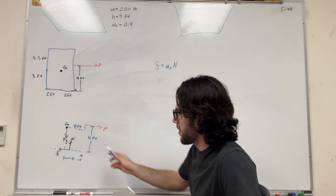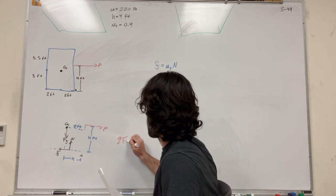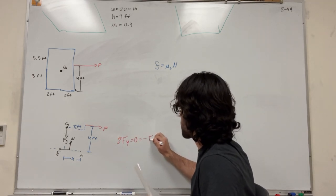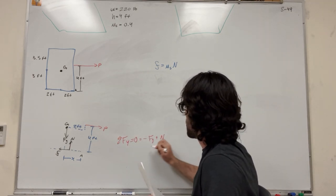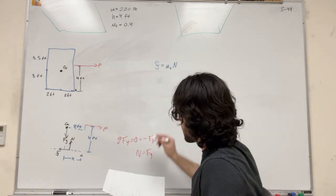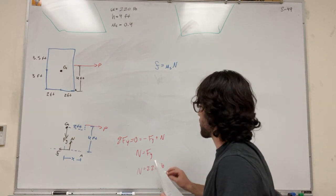We know that friction is equal to the coefficient of static friction times the force normal. So really quickly, we can figure out here, we can do sum of the forces in the Y. It's equal to zero. We know that force gravity pushes down, so it'll be minus force gravity plus normal. So we know that normal is equal to the gravity, or force of gravity, and we are given that it weighs 220 pounds. So we know that normal is equal to 220 pounds right off the bat.